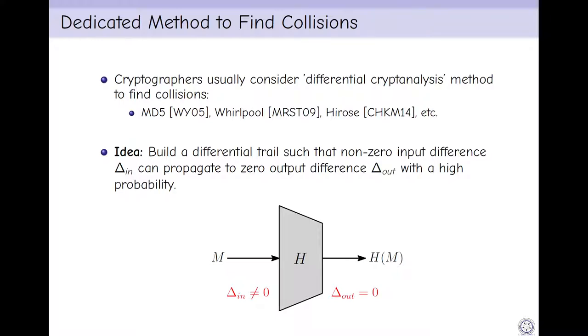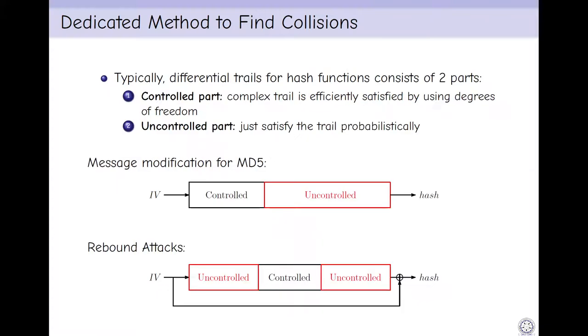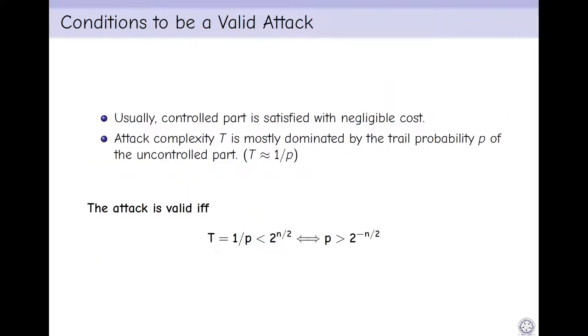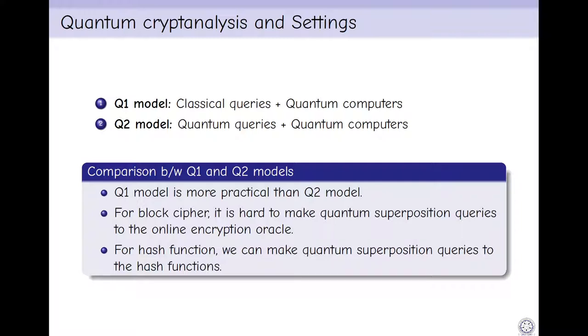The idea is to build a differential trail such that non-zero input differential Δin can propagate to zero output differential Δout with high probability. Typically, differential trails for hash functions consist of two parts: controlled part where complex trail is efficiently satisfied by using degrees of freedom, and uncontrolled part where trail is satisfied probabilistically. Usually, controlled part is satisfied with negligible cost, so attack complexity is mainly dominated by the trail probability p of the uncontrolled part. The attack is valid if T = 1/p, if and only if p > 2^(-n/2).